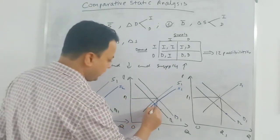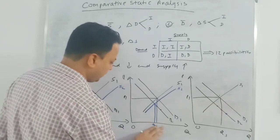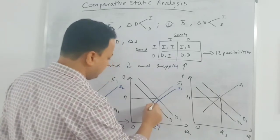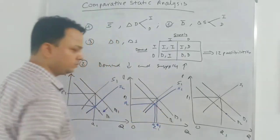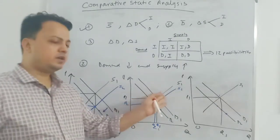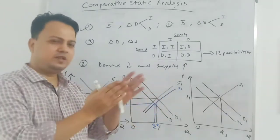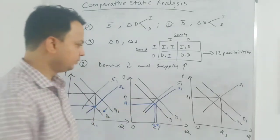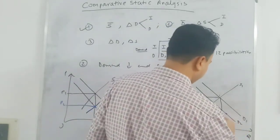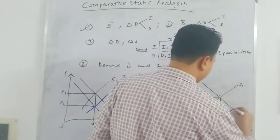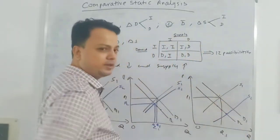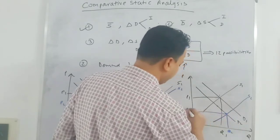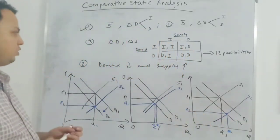In the second case, when the shift in demand is more than the shift in supply and there is very little shift in supply, equilibrium quantity is lower and price will be lower. In the third case, when the shift in supply is quite large compared to demand, equilibrium quantity is higher and price will be lower at the new equilibrium.